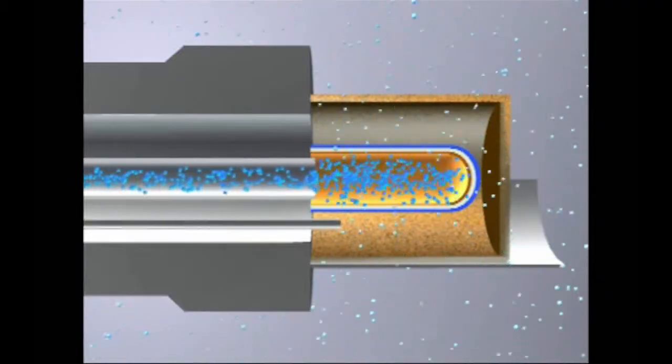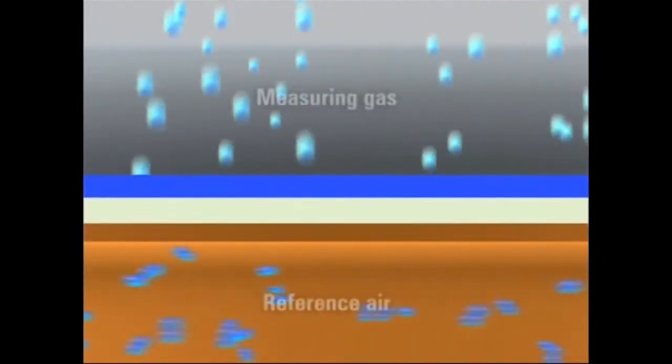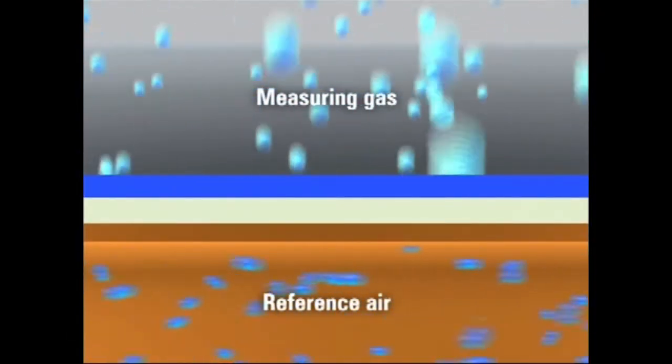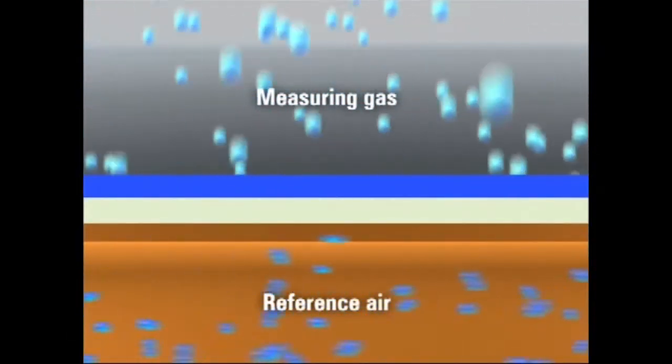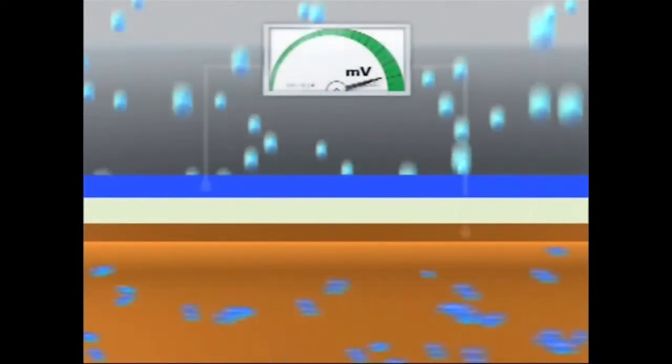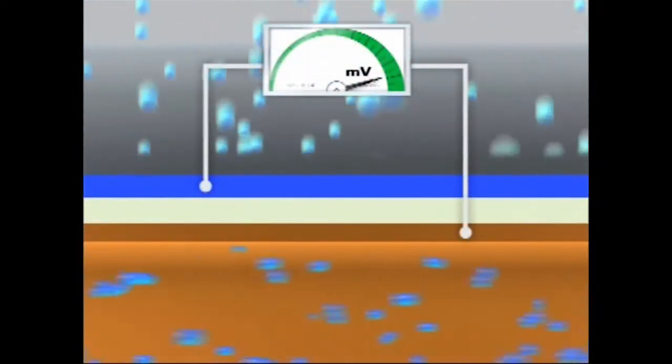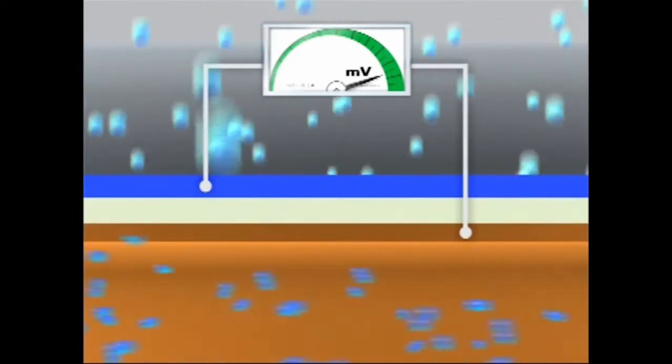As a function of the oxygen concentration, a voltage is generated between the measurement and reference electrodes. This voltage has a logarithmic relationship to the oxygen partial pressure and depends on the temperature of the measurement cell, necessitating additional monitoring and control of the measurement cell temperature.